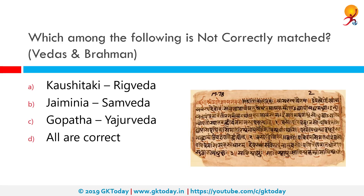Which among the following is not correctly matched? This is a match between Vedas and Brahmanas. The correct answer is Gopatha. Gopatha Brahmana is actually the Brahmana associated with the Atharva Veda.